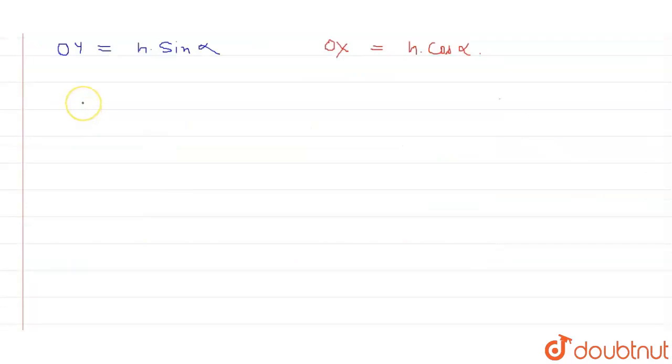Now we consider the triangle OWZ. In triangle OWZ, sin beta is equal to OZ by WZ. And we know that WZ is equal to h, that is the height of the ladder. And we can write it as OZ is equal to h multiply sin beta.